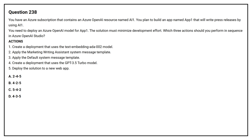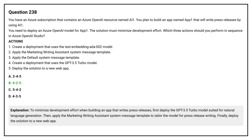Option A: 2, 4, 5. Option B: 4, 2, 5. Option C: 5, 4, 2. Option D: 4, 3, 5. The correct answer is option B: 4, 2, 5. To minimize development effort when building an app that writes press releases, first deploy the GPT-3.5 Turbo model suited for natural language generation. Then apply the marketing writing assistant system message template to tailor the model for press release writing. Finally, deploy the solution to a new web app.